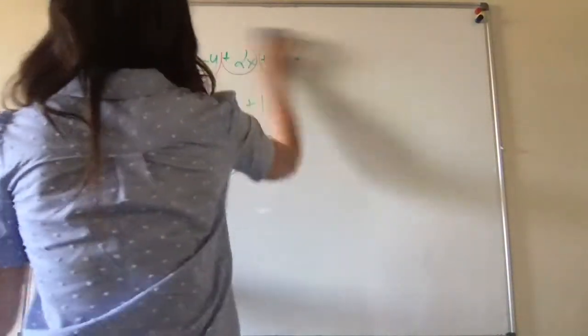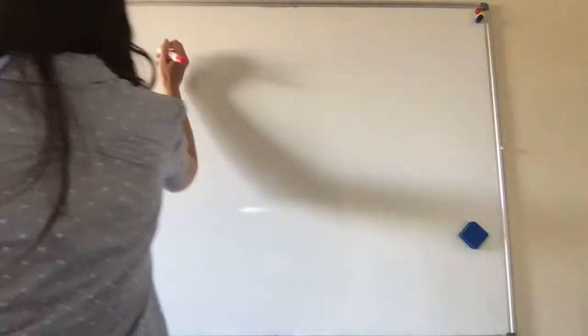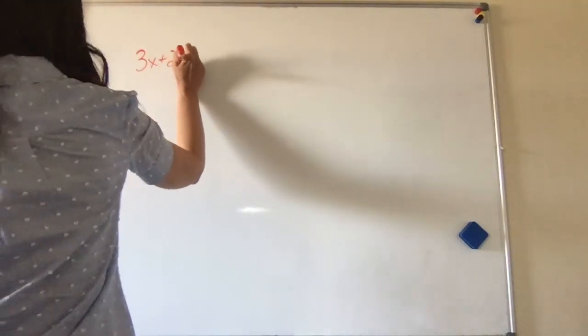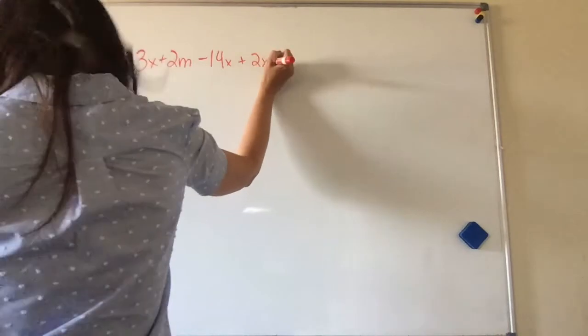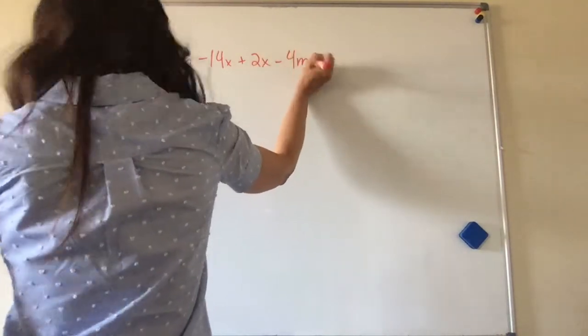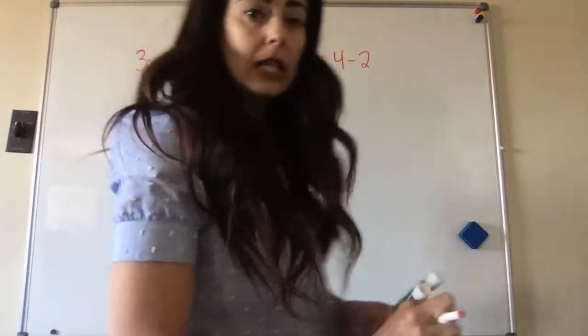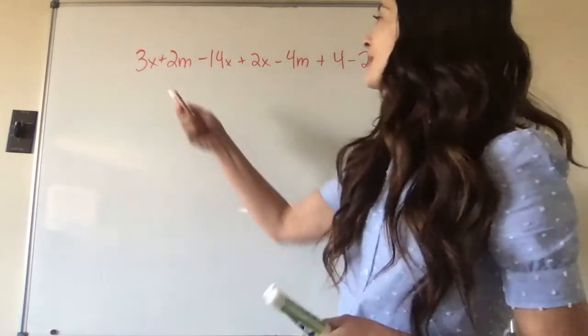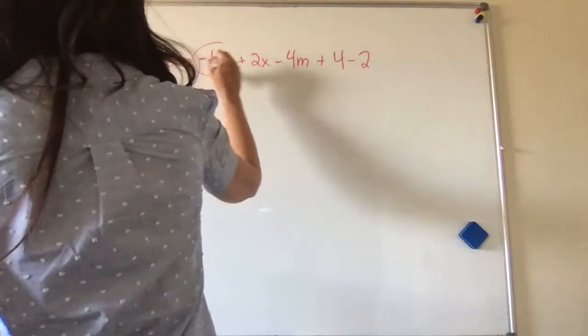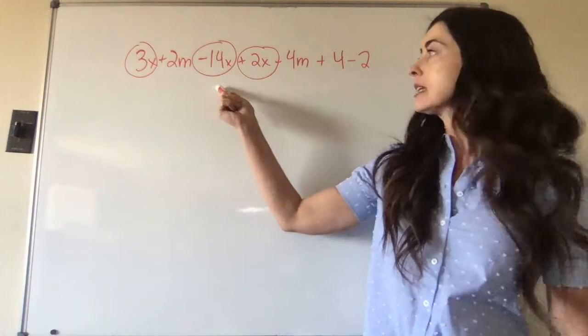All right. Let's do another example. 3x plus 2m minus 14x plus 2x minus 4m plus 1 plus 4 minus 2. All right. So you're going to get these long, ridiculous series of terms or expressions. And we're going to start with x. So we have a few x's in there.